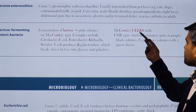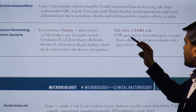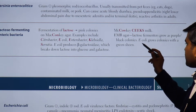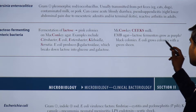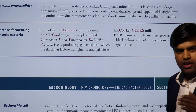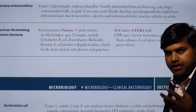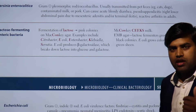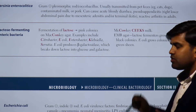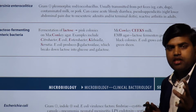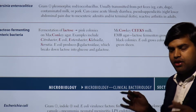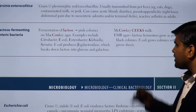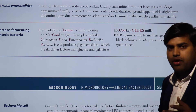On MacConkey agar, remember pink colonies are lactose fermenters: Citrobacter, Enterobacter, E. coli, Klebsiella, and Serratia. On EMB agar — eosine methylene blue agar — lactose fermenters grow as purple or black colonies. Notably, E. coli grows with a metallic green sheen on EMB agar, which distinguishes it from MacConkey.